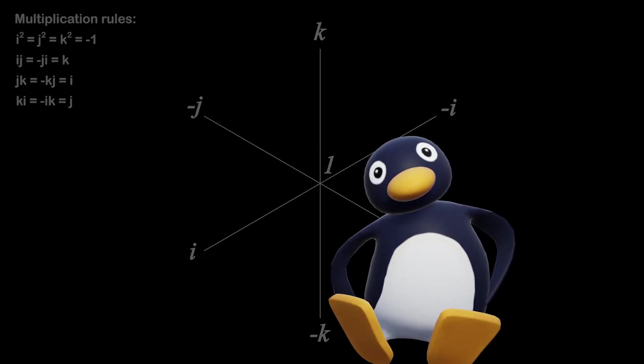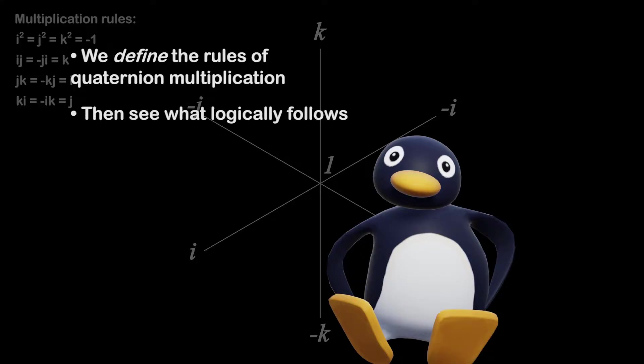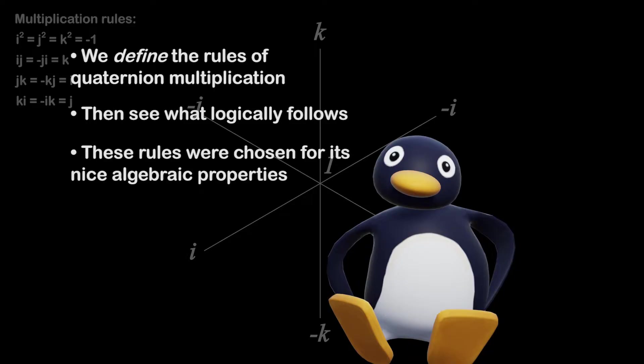Wait a minute. How do you know these multiplication rules are true? You basically pulled them out of a hat. It's because this is the definition of quaternion multiplication. It's not that we know it's true, it's that we're defining it to be true. Then we can see what logical consequences follow from this definition. William Hamilton, the guy who invented quaternions, chose this definition because it has some nice algebraic properties.